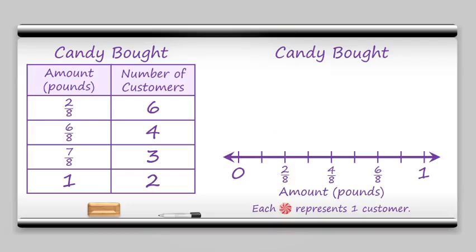I've marked our number line in eighths because that will correspond well to the information we're given. Above two-eighths we need to account for six customers. So we'll put six pieces of our candy.